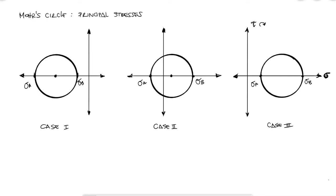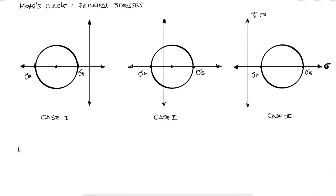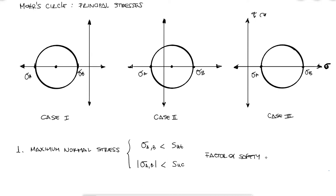The first failure criterion states that a component will not fail if neither principal stress is higher than the ultimate strength. The maximum tensile strength is commonly known as the ultimate tensile strength, and the maximum compressive strength is commonly known as the ultimate compressive strength. Therefore, the maximum normal stress criterion says that positive principal stresses should not be greater than the ultimate tensile strength, and the absolute value of negative principal stresses should not be greater than the ultimate compressive strength. It also states that the factor of safety can be calculated as the ultimate strength over the maximum principal stress — tensile for positive and compressive for negative — whichever N is the lowest.